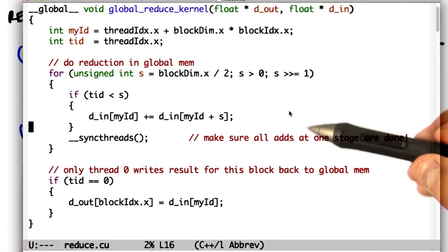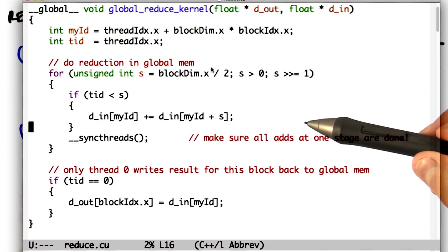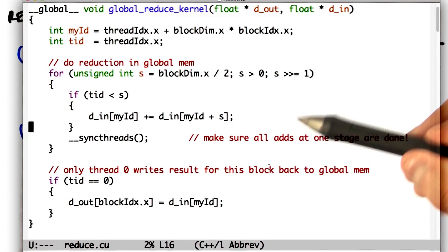In an ideal world, we'd do an original read where we read all of the 1,024 items into the thread block, do all the reduction internally, and then write back the final value. This should be faster because we would incur less memory traffic overall.